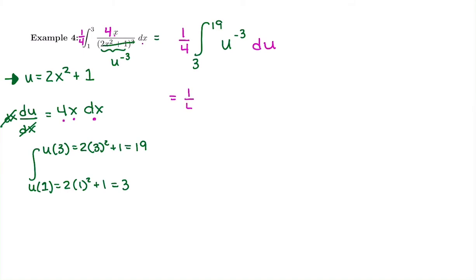Now I'm ready to integrate, which means I'm going to add 1. Negative 3 plus 1 is negative 2. So I'm going to have 1 over negative 2, u to the negative 2. And instead of a plus C, I'm going to do an evaluation bar from 3 to 19.